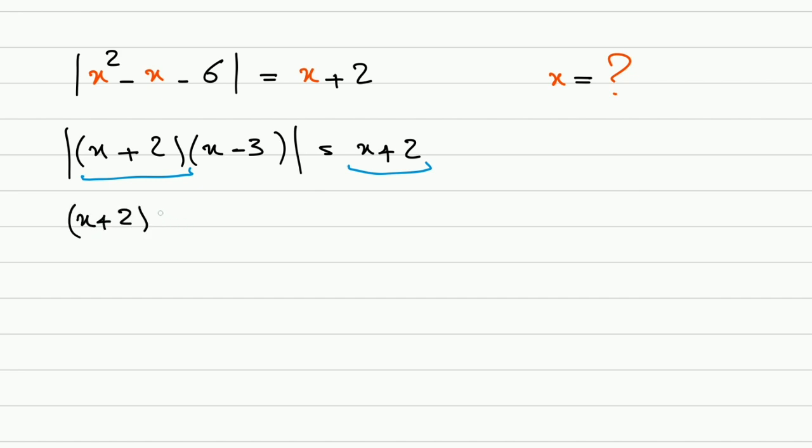That means this one is always positive. We can take it out of this absolute value function. We'll have x plus 2 times the absolute value of x minus 3 equals x plus 2. Let's factor x plus 2 on this side. We'll have absolute value of x minus 3 minus 1. That's equal to 0.